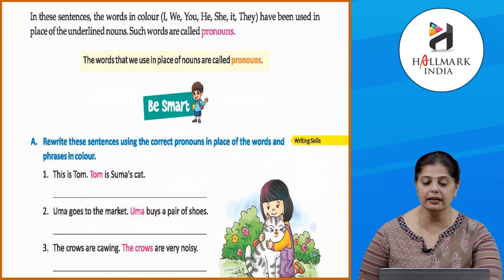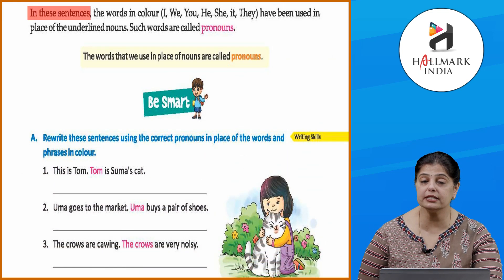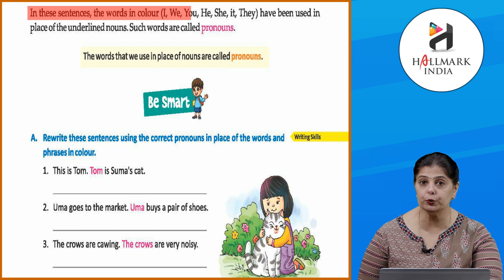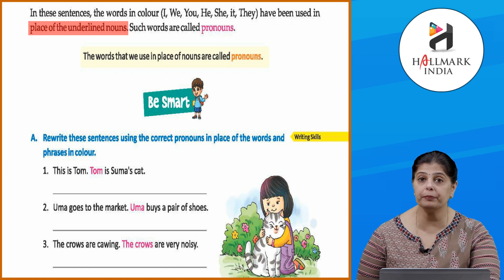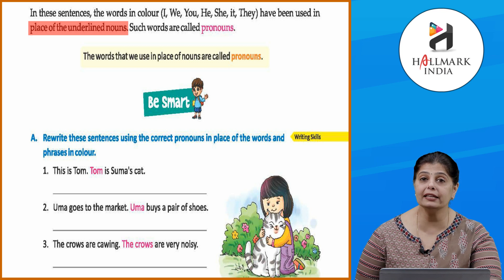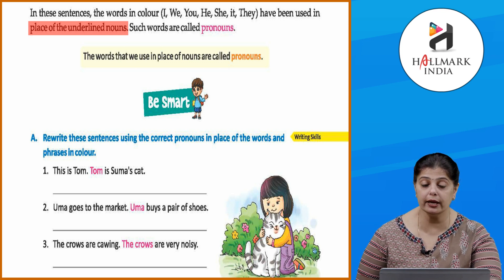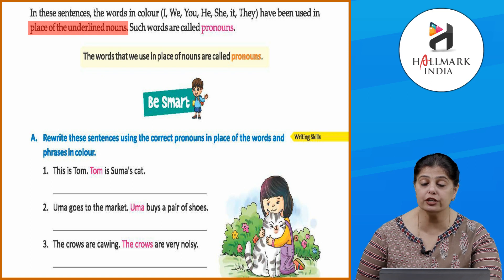So these are different sentences. In these sentences, the words in color — I, we, you, he, she, it, they — have been used in place of the underlined nouns. In the first example, my name is Tarun; what is Tarun? I am eight years old.